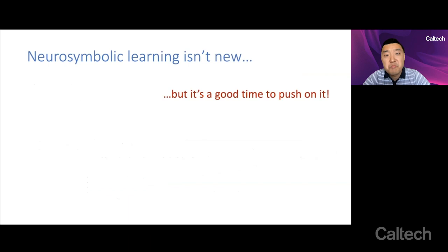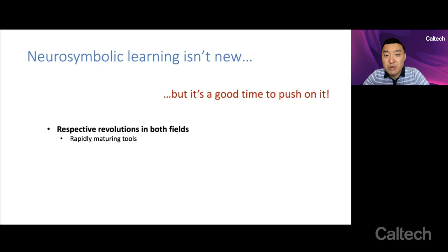Neuro-symbolic programming or neuro-symbolic learning, depending on how you want to think about it, isn't new. People have been thinking about ideas like this for quite a long time. But my hypothesis or my proposal is that now is a very good time to push on this area with renewed vigor. And the reason is that there's been respective revolutions in both fields leading to rapidly maturing tools, both in deep learning and in program synthesis.